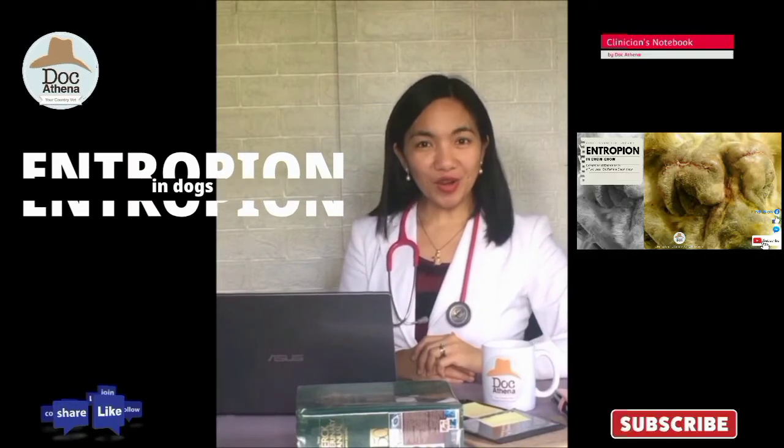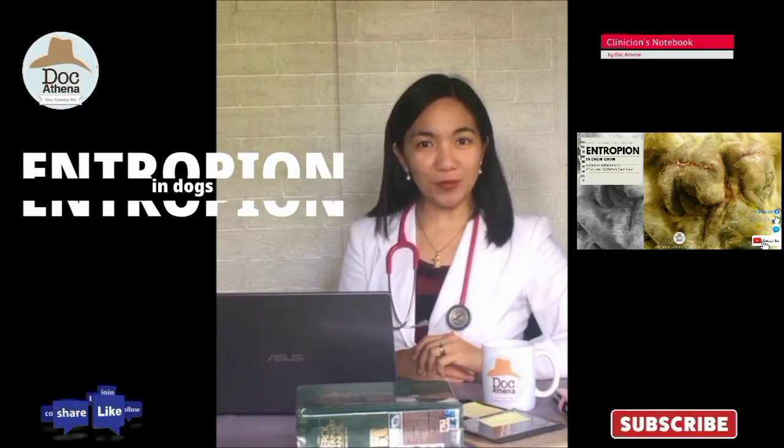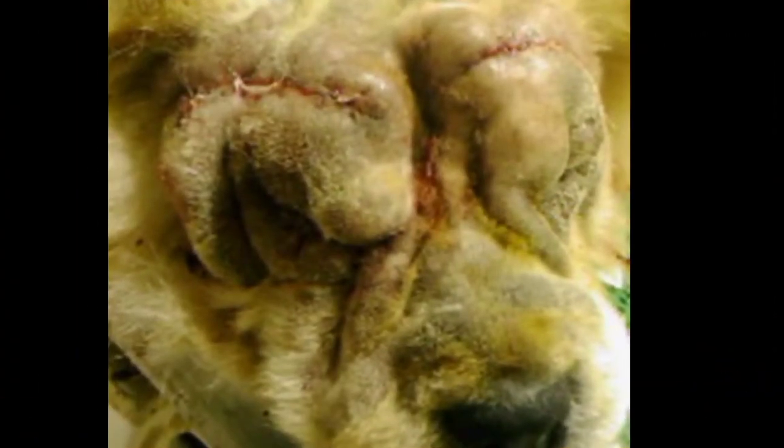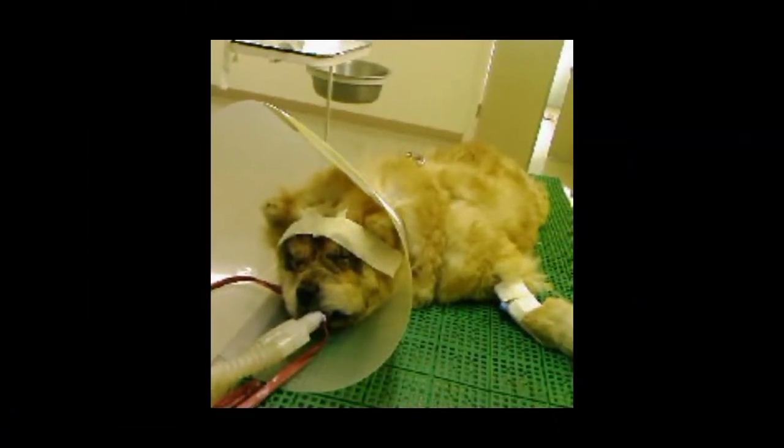Today, we are going to discuss case number 003: entropion in dogs. What is entropion? Entropion is the abnormal inversion of the lid margin that may involve both eyelids, and is caused by several factors including anatomical or congenital, cicatrical, or spastic abnormalities.